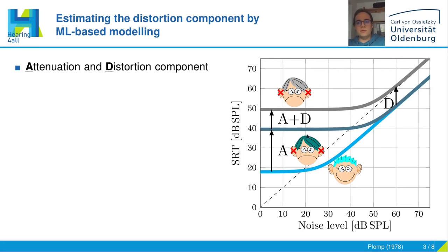To determine these two parameters, one can do two SRT measurements — one in quiet, one in noise — and then fit these functions to it. However, this procedure is rather bothersome, so it would be nice to have some other approach to figure out this D component.